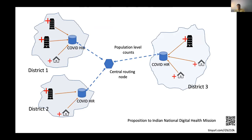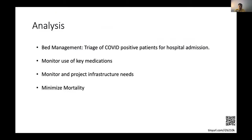This is what we proposed in India to the government — the National Digital Health Mission, which is the counterpart of ONC in India. We proposed that we could do this at a district level: accumulate data from hospitals at one site and connect them via our STRIDE network. That is what we are pursuing.